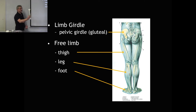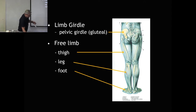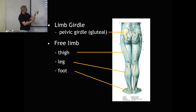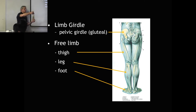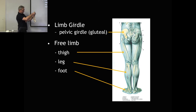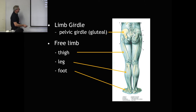In the leg we have two long bones: the tibia, which is the largest and most medial, and the fibula, which is lateral. When we get to the foot, we have a lot of bones — the tarsal bones, the metatarsal bones, and the phalanges. There is also a sesamoid bone in the knee worth noting.